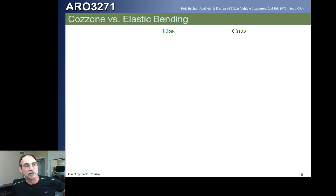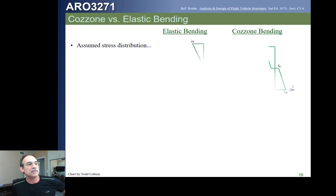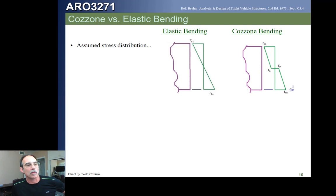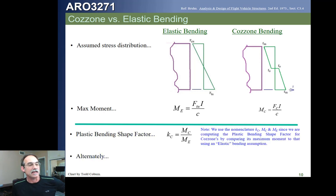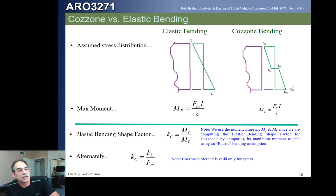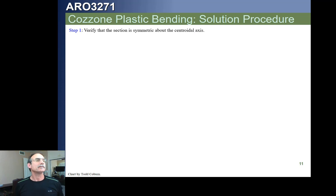If we compare our methods: with elastic bending, stress changes linearly from compression to ultimate. With Cozzone's method, we go from Fm to Fo in a linear fashion, then have a discontinuity at the neutral axis with reverse behavior on the tension side. Our max moment expressions are given accordingly, and therefore our plastic bending shape factor is still the ratio of the plastic allowable to the elastic allowable.